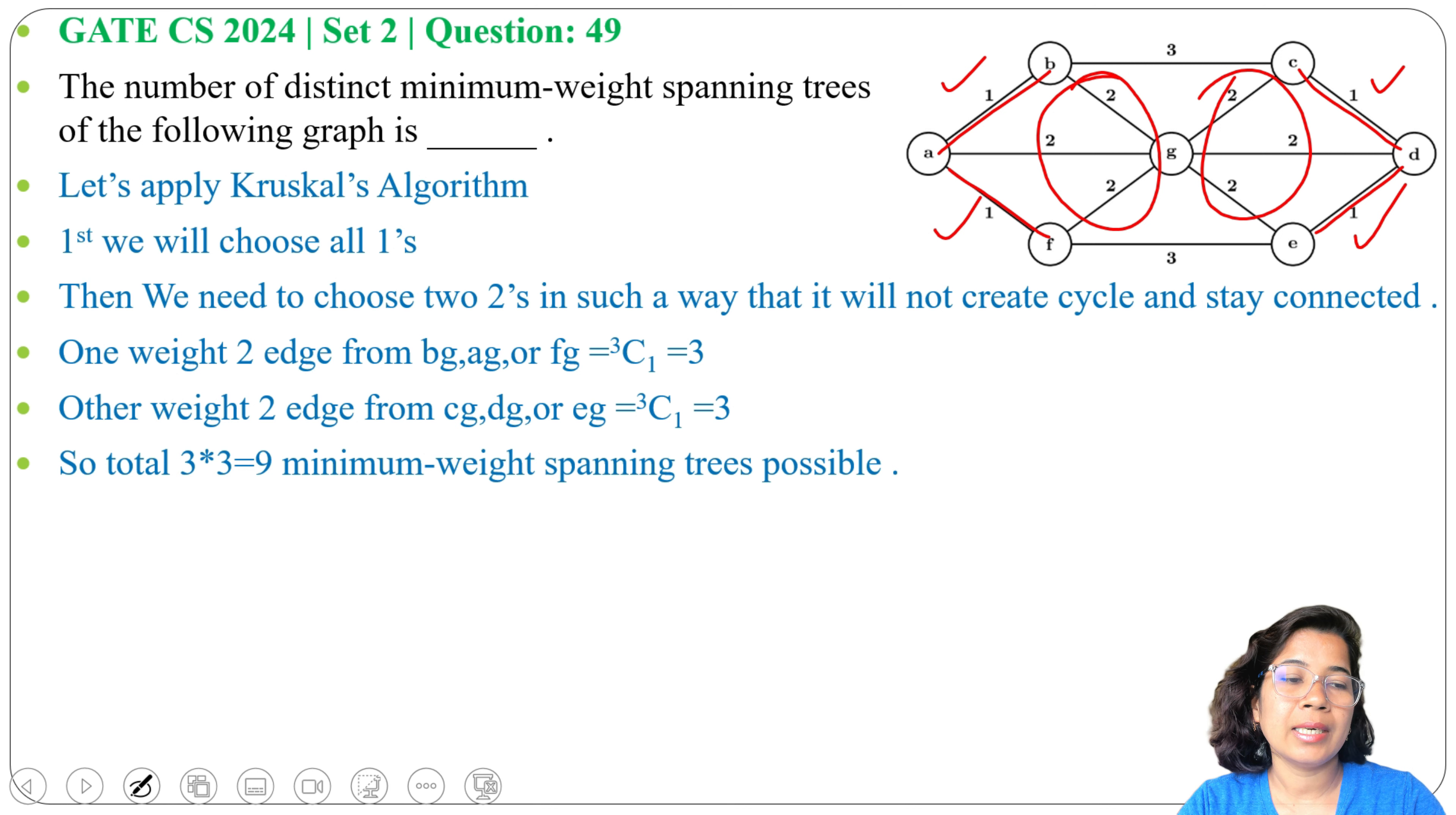One edge from BG, AG, or FG, and one edge from CG, DG, or EG. After choosing these two edges, there will be a total of 6 edges and it will be a minimum spanning tree. You don't need to choose any other edge. So total 9 distinct minimum spanning trees are possible on this graph.